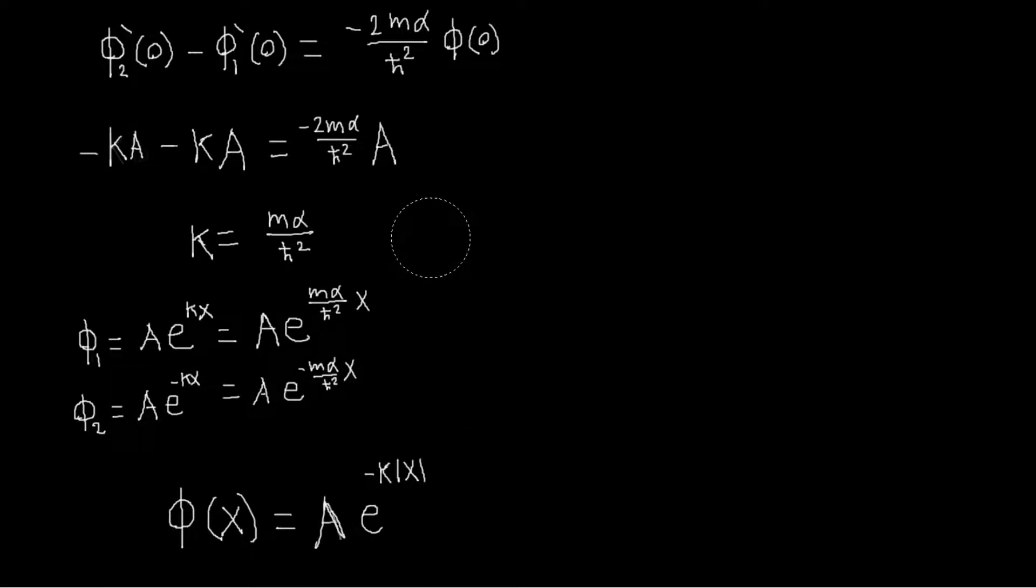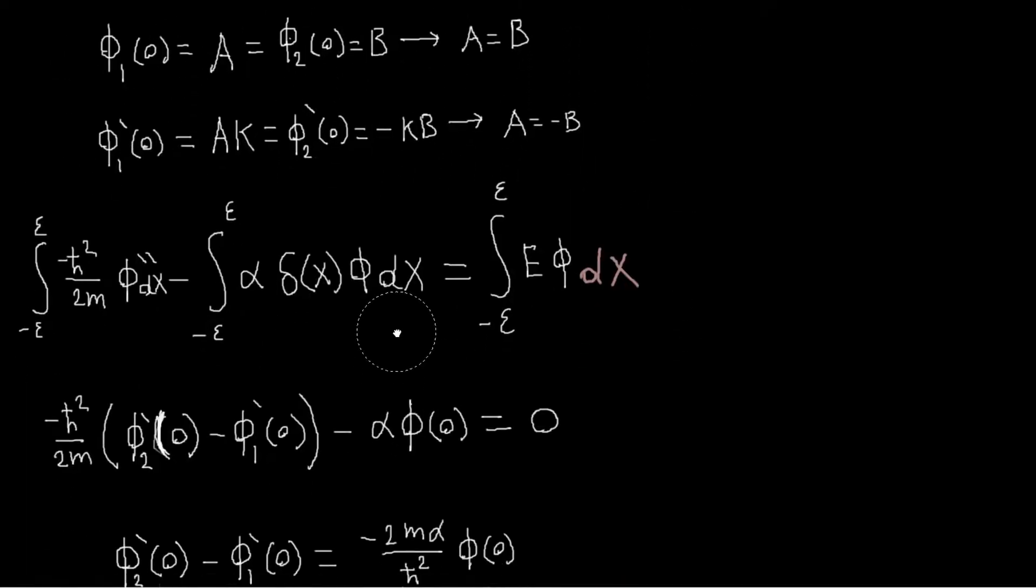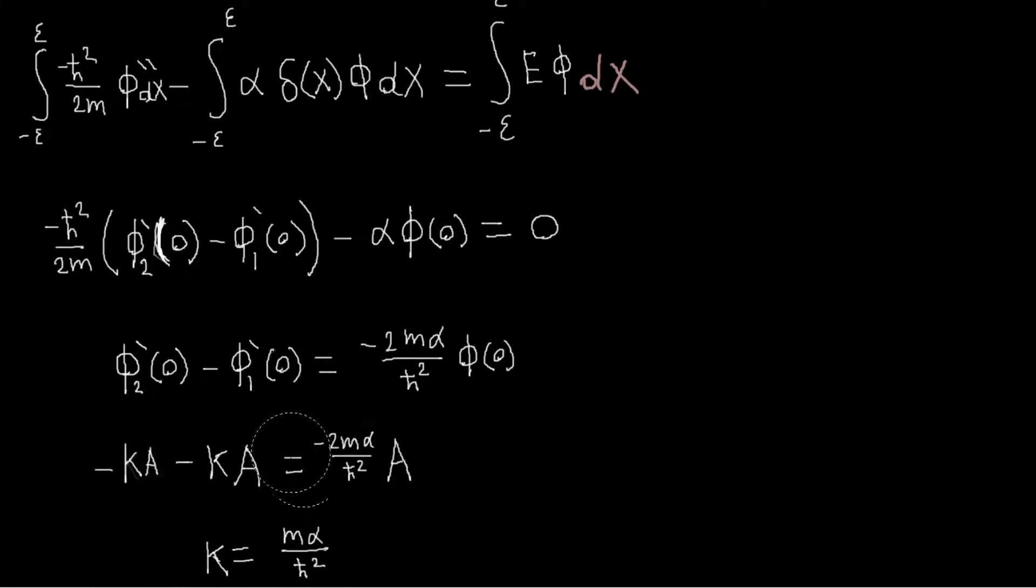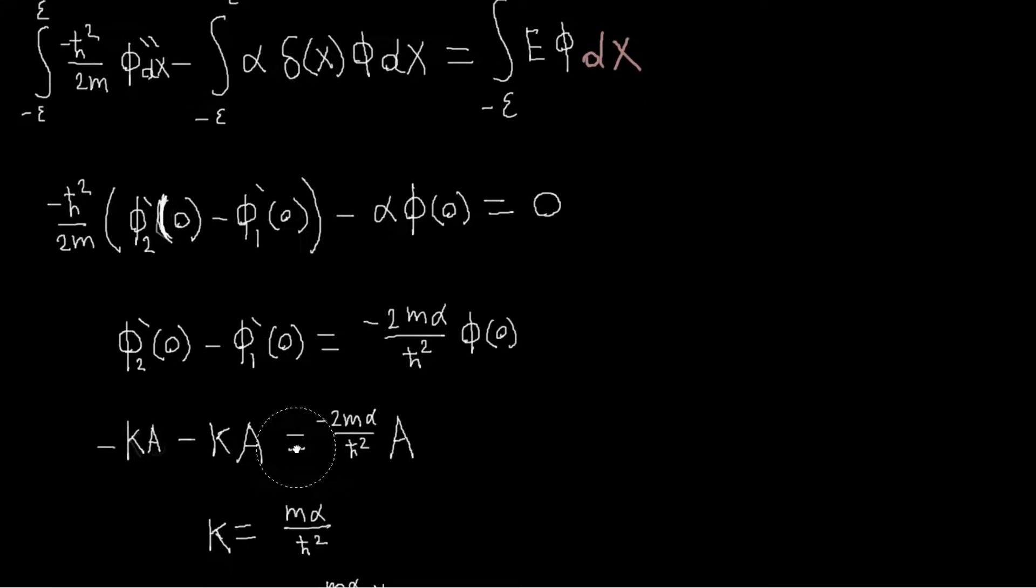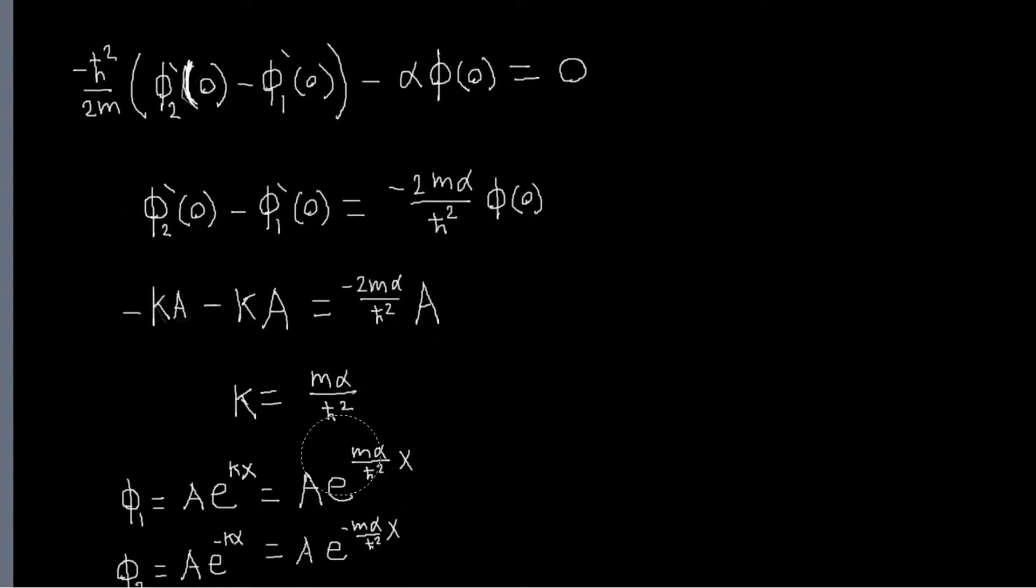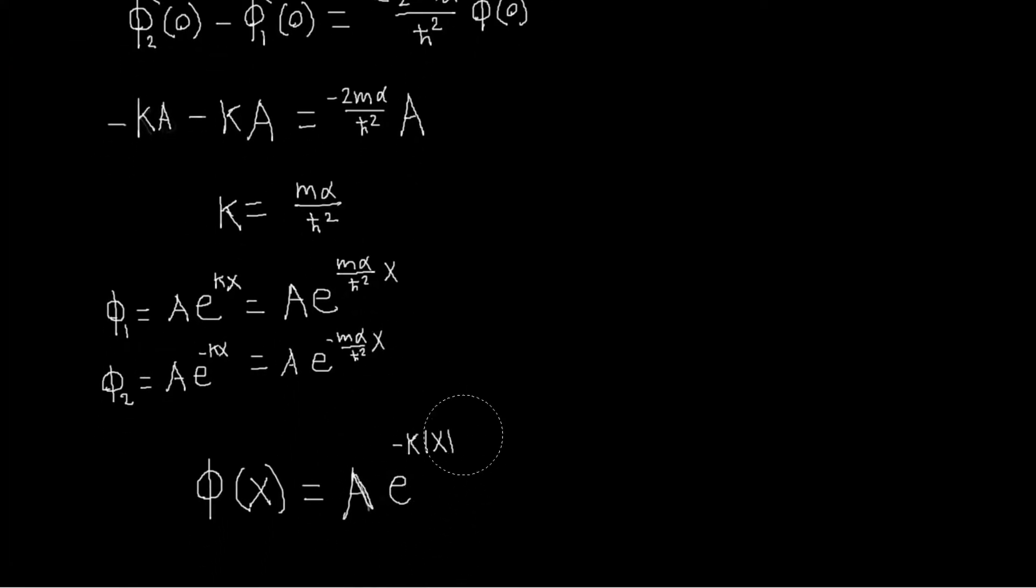So we found from our delta function potential, that one, we had to come up with a new boundary condition, which is this. And then using that, after we've done that, we do the same thing that we always do. We get a constraint on k that tells us what our energy eigenvalues are. And in this case, we only have one solution. So there is one eigenstate and one eigenfunction that looks like this.